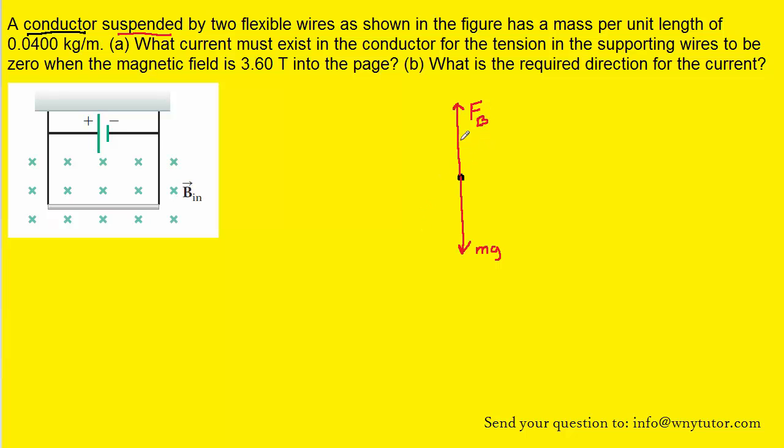Now again, to be suspended, the magnitude of these two forces must be equal. So we can actually set the magnetic force magnitude equal to the gravitational force magnitude. Now we know that the magnetic force acting on a current carrying wire is equal to the magnetic field multiplied by the current, multiplied by the length of the conductor, and then multiplied by the sine of the angle between the current and the magnetic field.